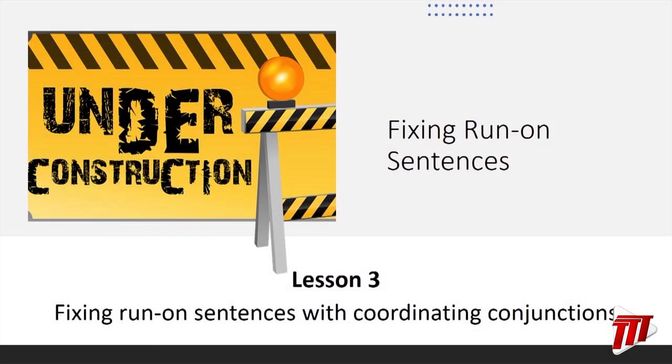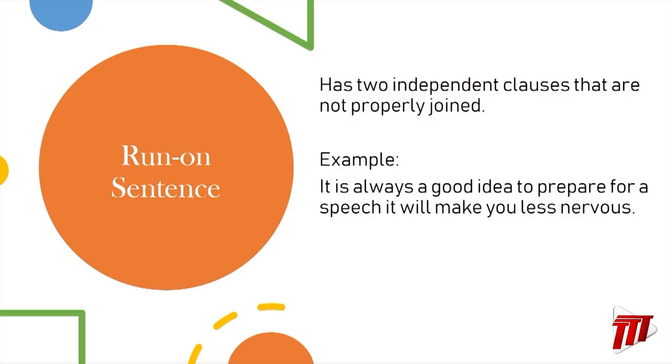Welcome back, students, to the series on fixing run-on sentences. In this lesson, we're going to explore how to fix run-on sentences with coordinating conjunctions. That sounds like a really big, confusing term, but don't worry — we're going to work it out. You've heard this before. Let's review first what run-on sentences are. As you know, a run-on sentence has two independent clauses that are not properly joined.